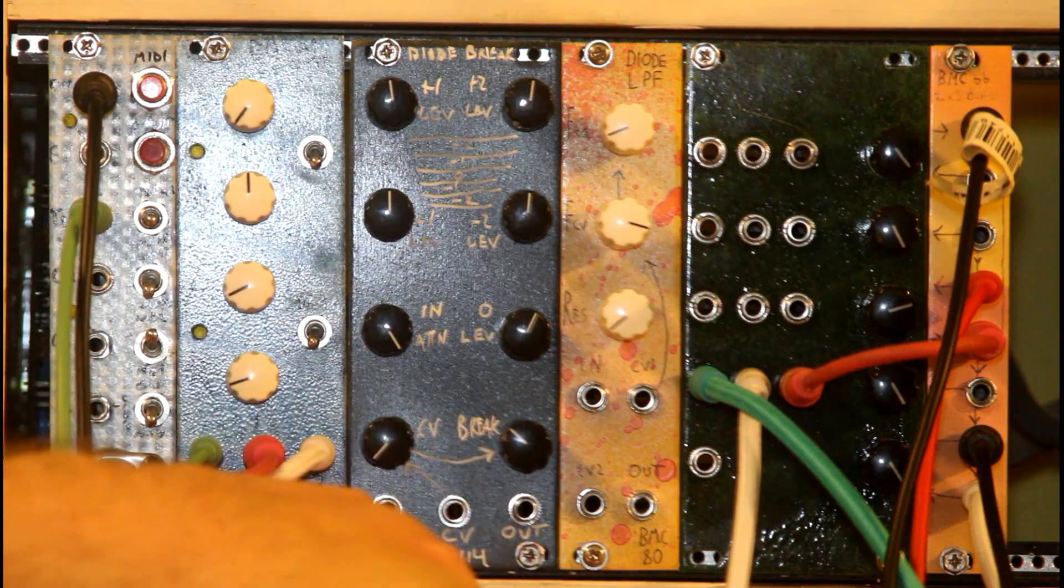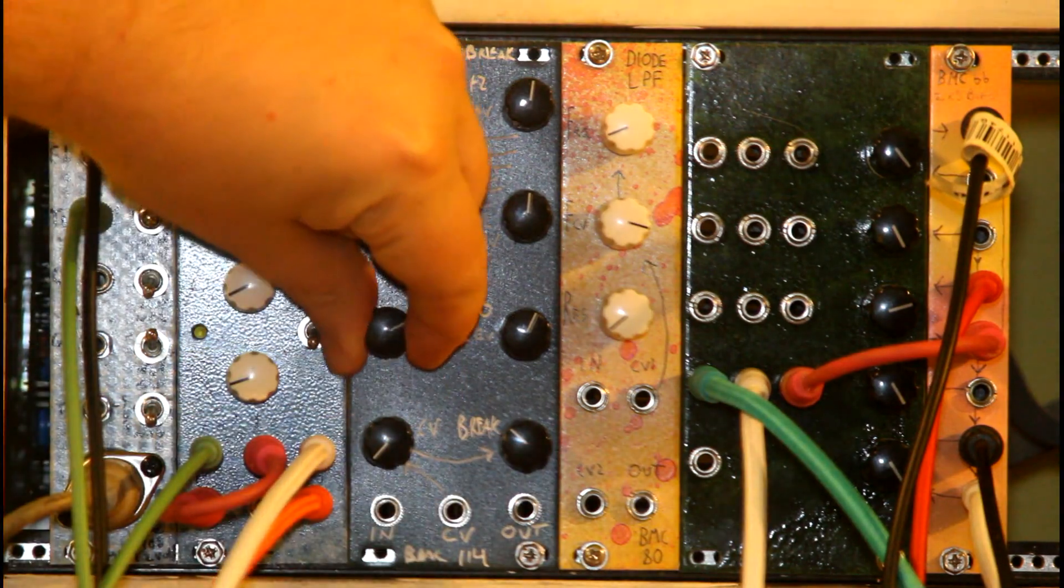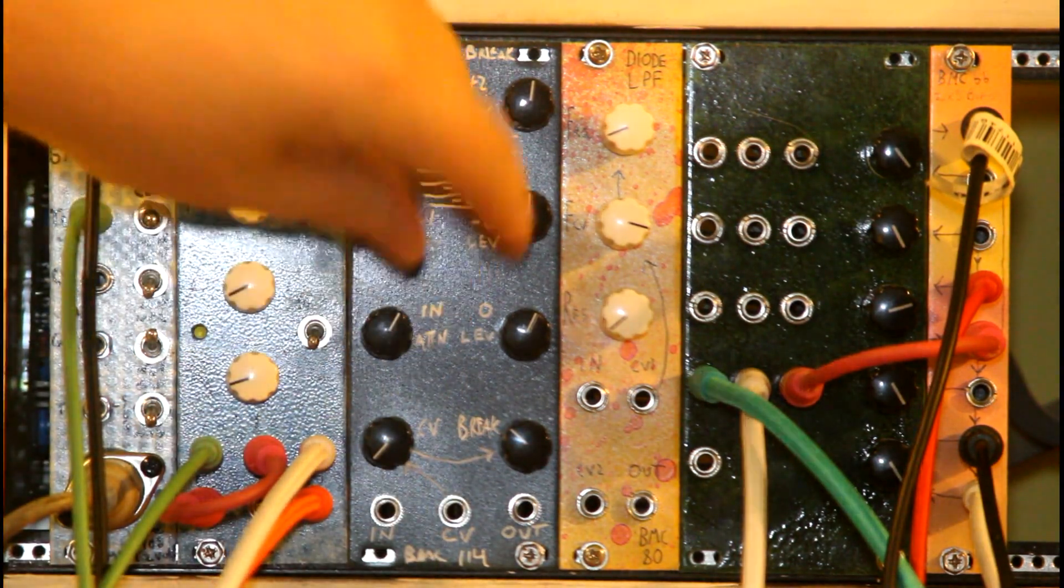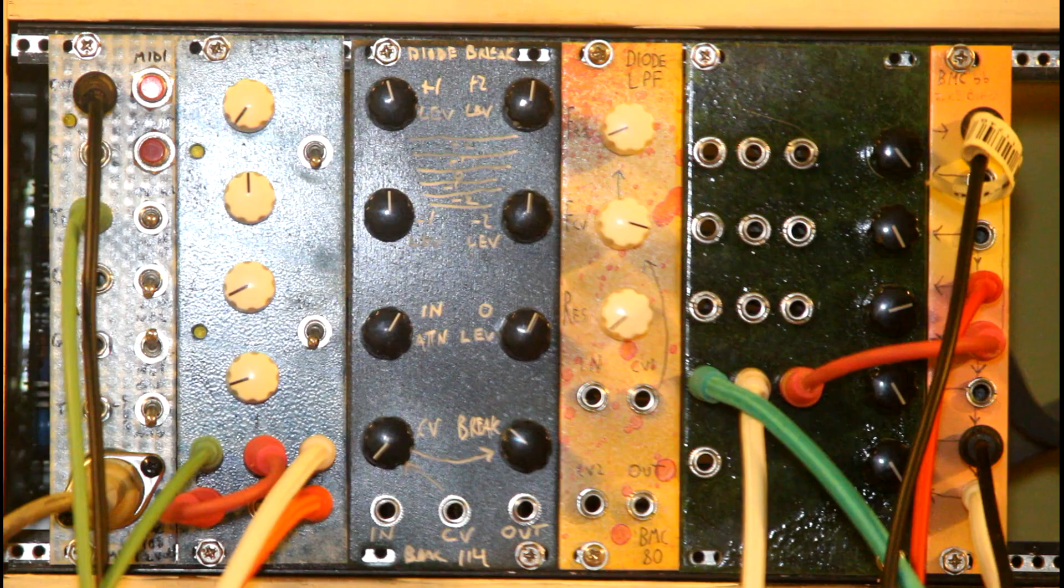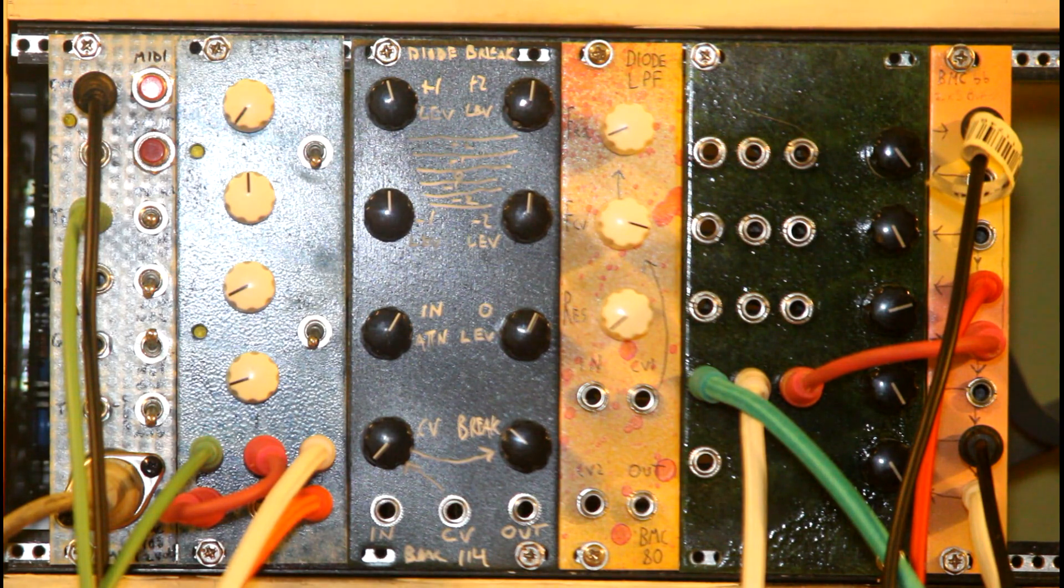The only other control besides the input and output jacks is our input attenuator. This is going to control how much distortion you have on the end, and it's going to affect the relative thresholds. As the waveform gets smaller, the thresholds will seem larger.